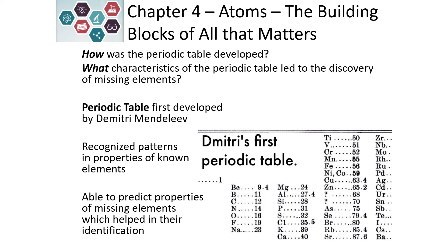The periodic table is a wonderful and very useful reference tool. It was first developed by Dmitry Mendeleev, and he recognized that there were properties of the elements that repeated. They had similar properties to each other, and he started laying out the table so that those properties were near each other. By doing this, he was able to help predict that there would be unknown elements yet to be discovered.